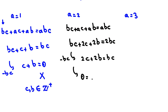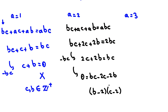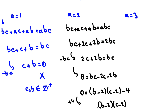Taking all terms to one side: BC - 2C - 2B = 0. We use a famous factorization: (B - 2)(C - 2) expands to BC - 2B - 2C + 4. So BC - 2C - 2B = (B - 2)(C - 2) - 4. Adding 4 to both sides gives (B - 2)(C - 2) = 4.